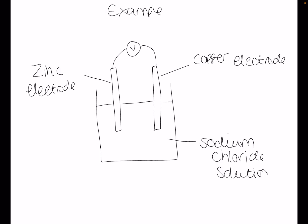Here is an example of a basic electrochemical cell. Here we have a zinc electrode and a copper electrode. These are put into a solution of sodium chloride.